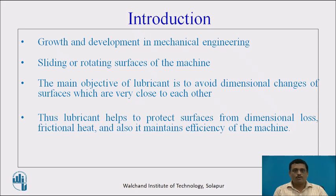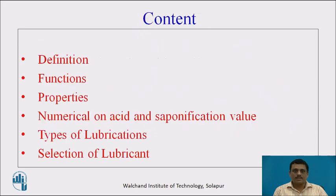Therefore, the main objective of lubricant is to avoid dimensional changes of surfaces which are very close to each other. Lubricant helps to protect surfaces from dimensional loss and frictional heat, and also maintains the efficiency of the machine. In this session, we will cover: definition, functions, properties, numericals on acid and saponification value, types of lubrication, and finally, selection of lubricant for a particular machine.